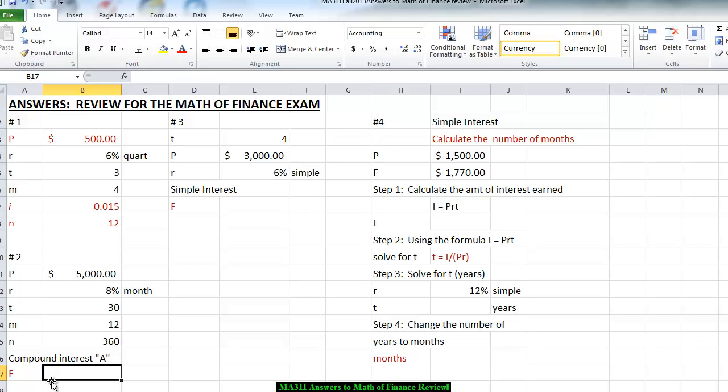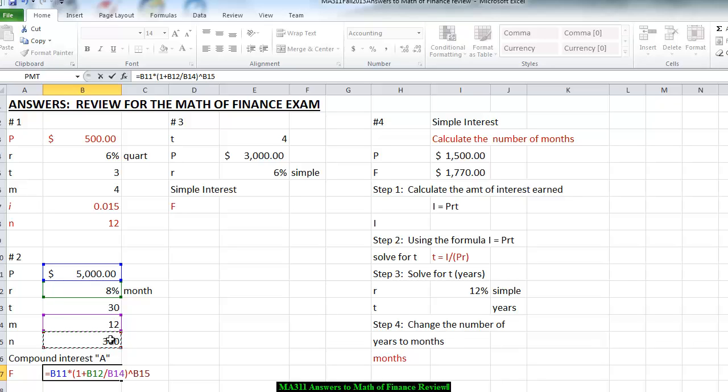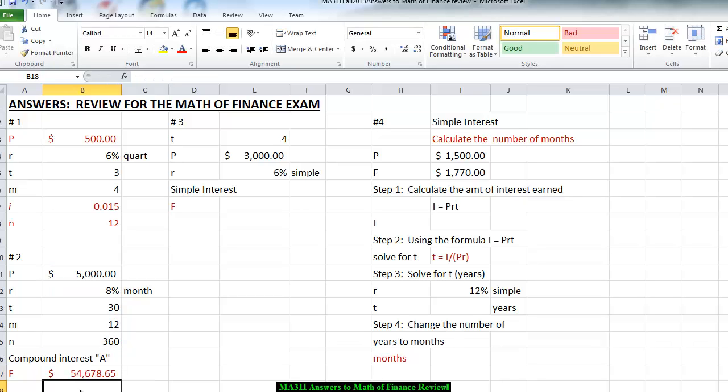Using the formula for the future value, we take the principal times, open parentheses, 1 plus the I, and remember the I is the 8% divided by the 12, exponent button, the N of 360, and therefore it will be worth $54,678.65 in 30 years. Telling us we earned interest of $4,678.65.